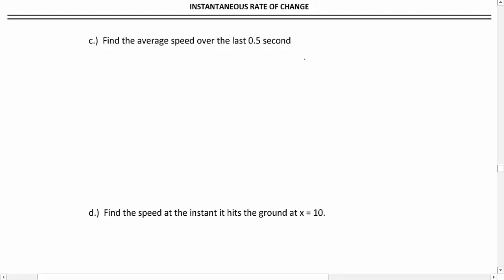If it's over the last half second, that means x₁ would be 9.5 and x₂ is going to be 10. We'll find f(x₁), plugging it into our original function. We're going to get 76, and we already know what f(10) is. That's equal to zero.